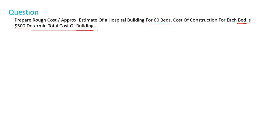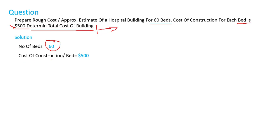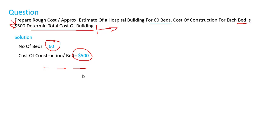We need to find the total cost of the building. The solution: number of beds is 60, and the cost of construction per bed is $500. Total cost equals number of beds multiplied by cost of construction, which equals $30,000. This is how we find the approximate estimate according to the unit rate method.